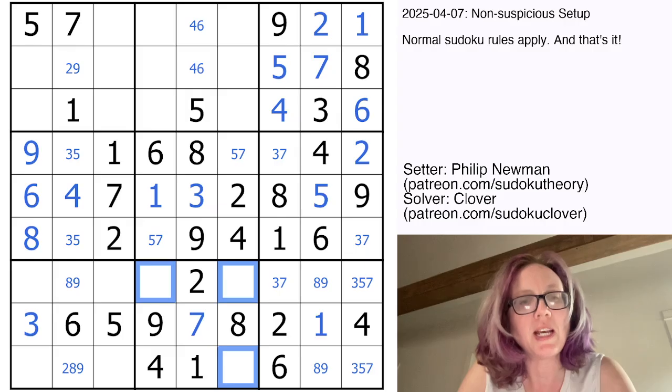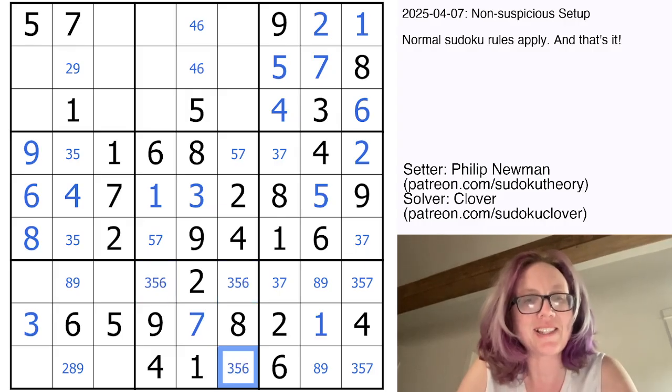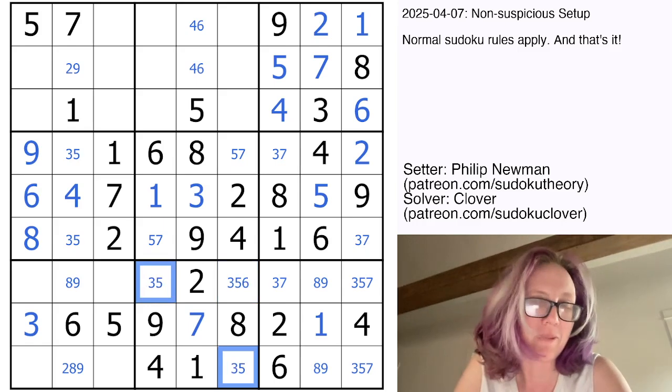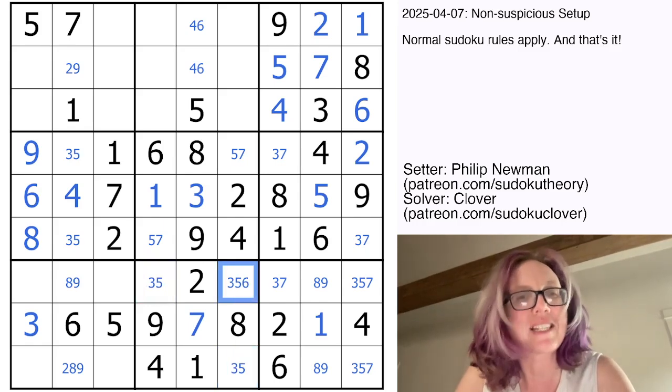In this region, I need a 3, a 5, and a 6. Neither of these cells can be 6. It's a very similar setup to the one that we've been seeing the whole solve. That's going to be my 6.